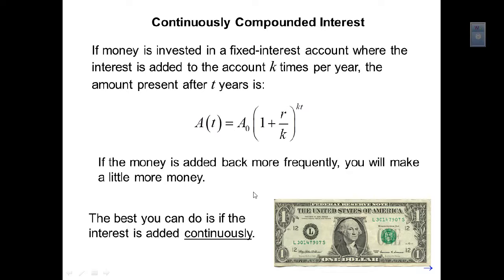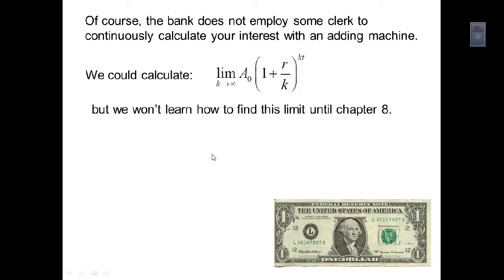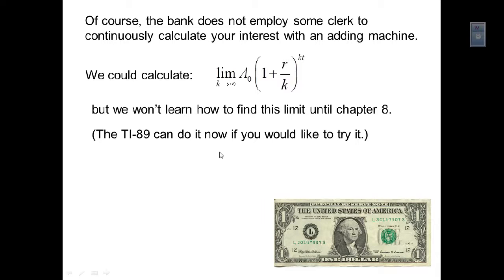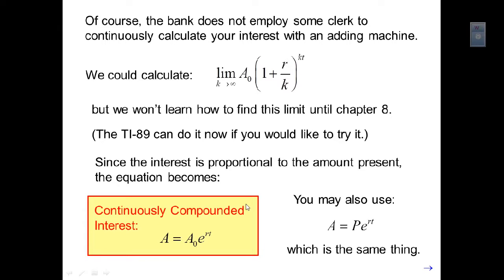The best you can do is if interest were added continuously, which won't happen in a typical bank account. By letting k go to infinity — a limit we won't be able to find until chapter 8 — you end up with A equals A₀ times e to the rt. You've probably seen this before in pre-calc as the PERT formula: P times e to the rt, where P is the principal, r is the percentage rate as a decimal, and t is in years.